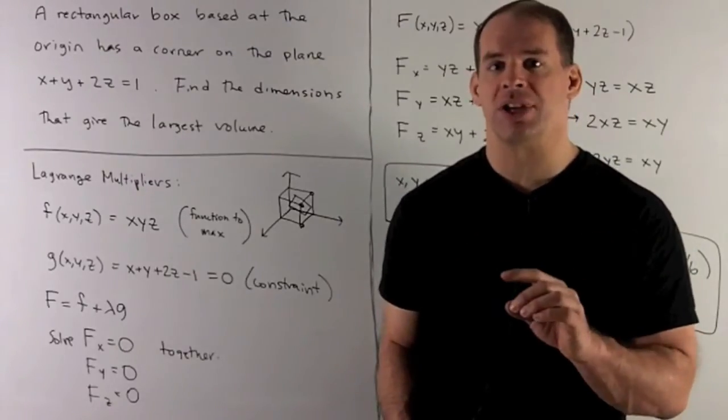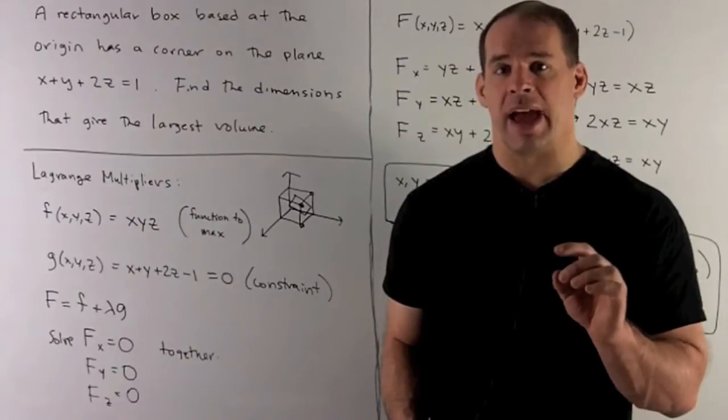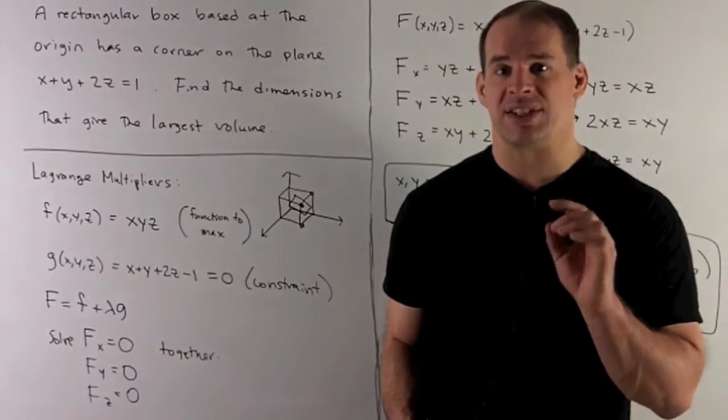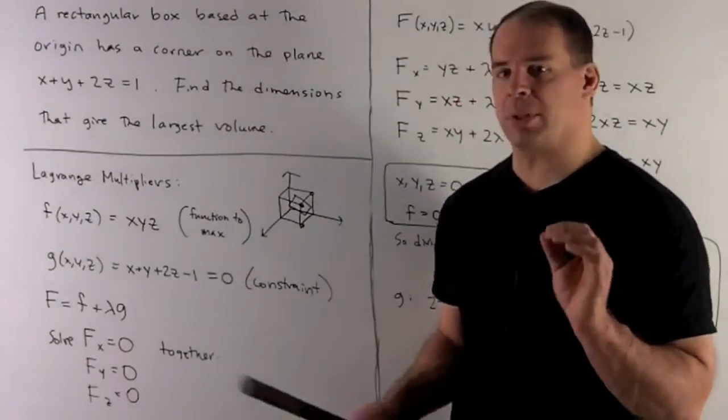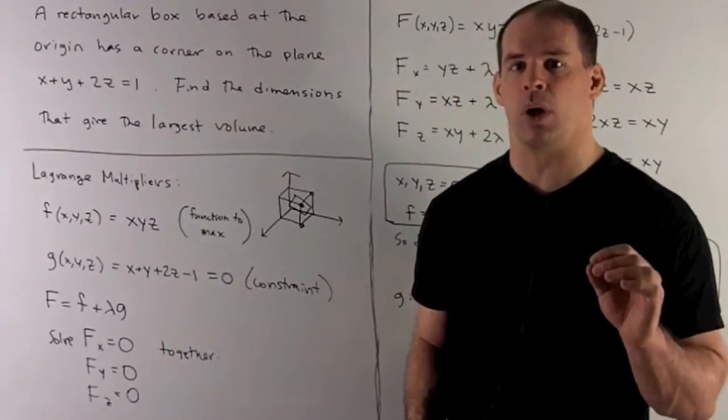And for the constraint equation, we want to set it up so that the equation of the plane is set equal to 0. So our constraint is going to be g equal to x plus y plus 2z minus 1.